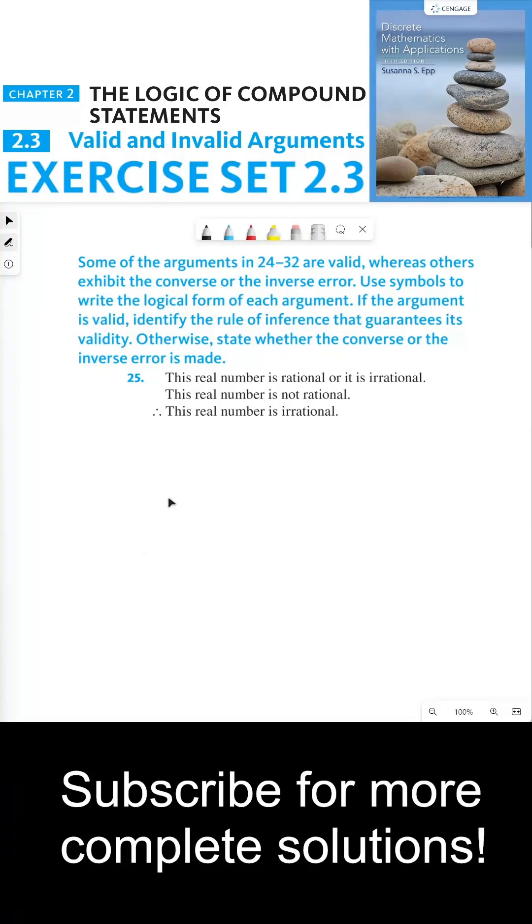Some of the arguments in 24 through 32 are valid, whereas others exhibit the converse or the inverse error. Use symbols to write the logical form of each argument. If the argument is valid, identify the rules of inference that guarantees its validity. Otherwise, state whether the converse or the inverse error is made.